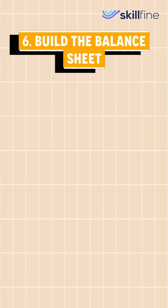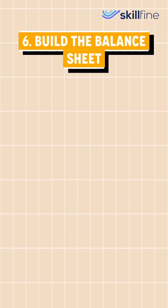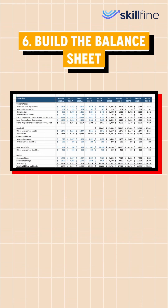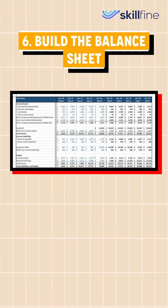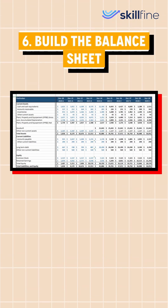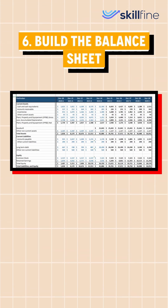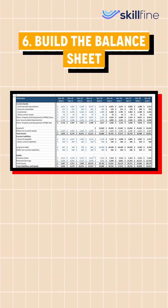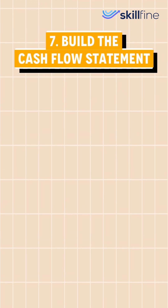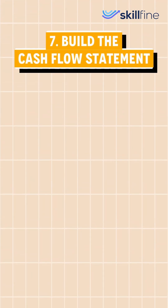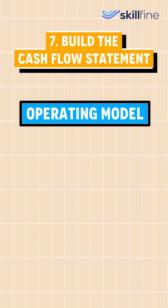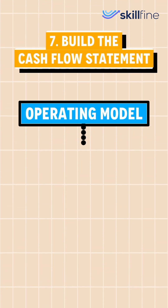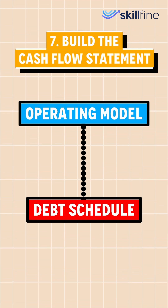The sixth step is building the balance sheet. The balance sheet reflects how the company's profitability and cash generation impact key financial elements. After this, we build the cash flow statement, which serves as the bridge connecting the operating model to the debt schedule.